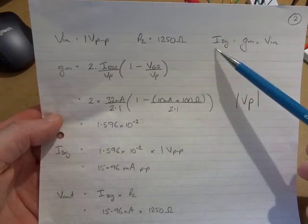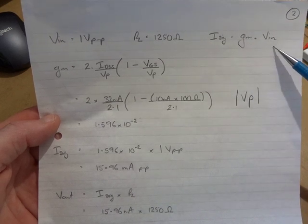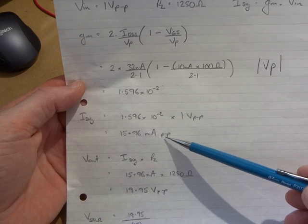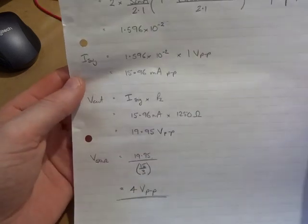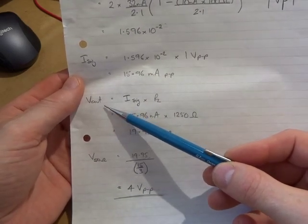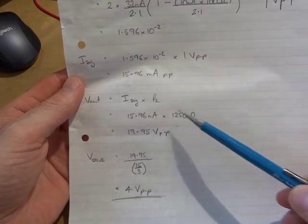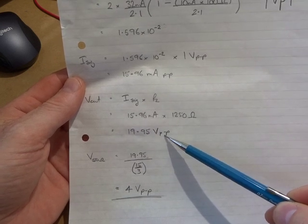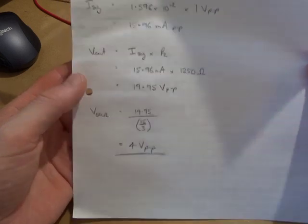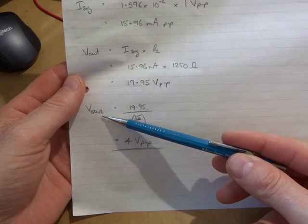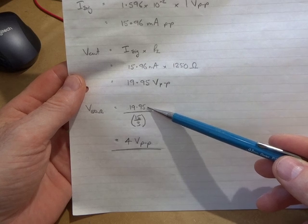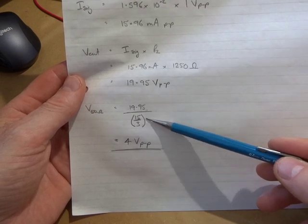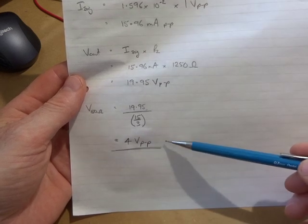The signal variation through the device is our transconductance times our Vin. Now that we've worked out our Gm, we multiply that by 1 volt peak-to-peak, gives us 15.96 milliamps peak-to-peak. Our Vout across the primary of the transformer, the 1250 ohm side, from Ohm's Law, current times voltage gives us 19.95 volts peak-to-peak across the primary. The voltage on the secondary, what I've called the voltage across the 50 ohm resistor, would be that voltage on the primary divided by N, our turns ratio. 15 divided by 3 gives us N of 5. 19.95 divided by 5 comes out at 4 volts peak-to-peak.